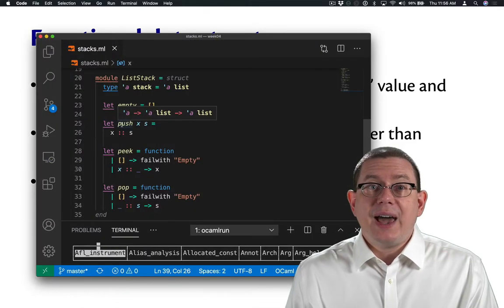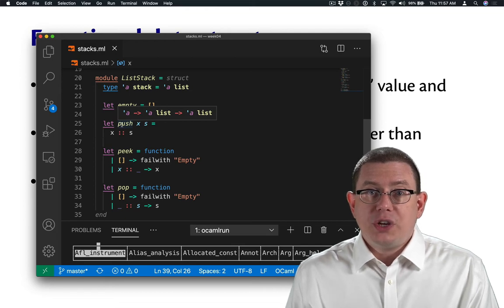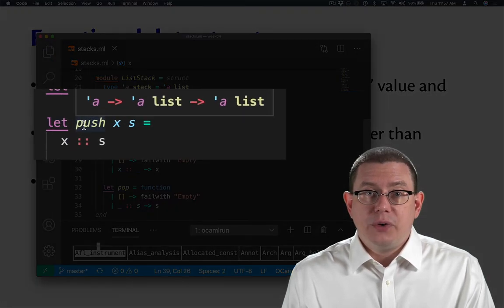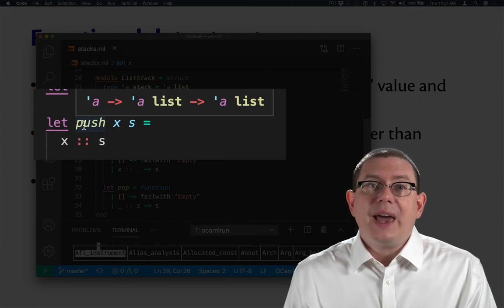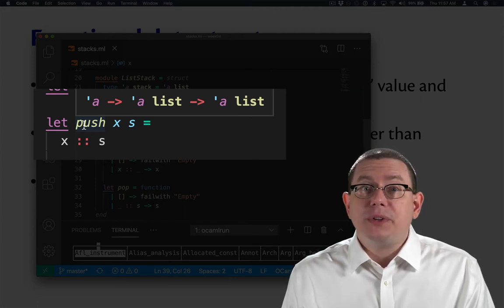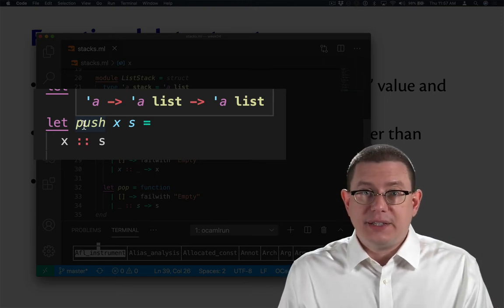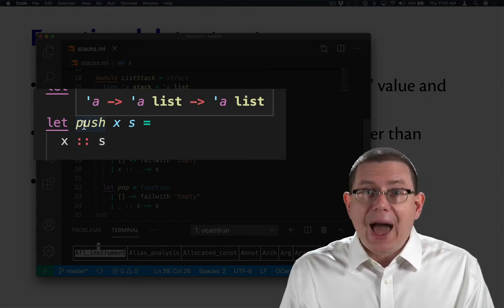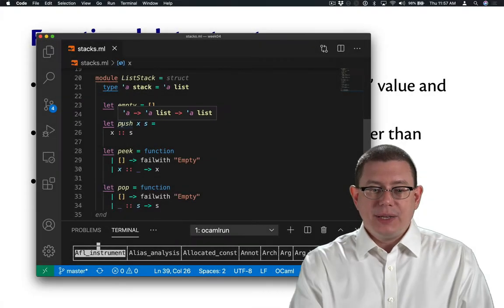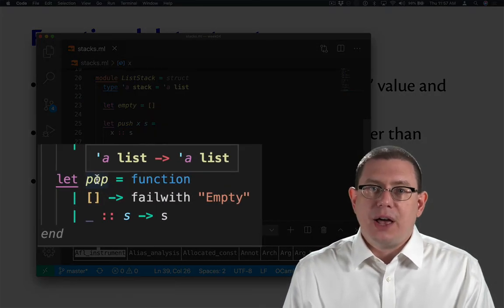You can see that in our stack implementations when you look at the types of the operations. Push takes in a value and a stack, that is an alpha and an alpha list, and gives us back an alpha list. It actually does not change the underlying stack. That old stack is immutable, as always. Instead, push gives us back a new stack. Same thing with pop. It takes in an alpha list and returns an alpha list.